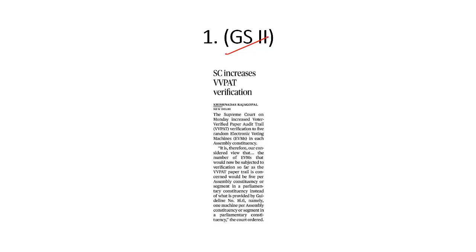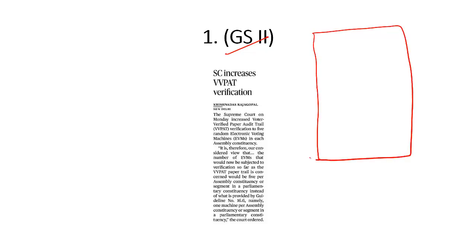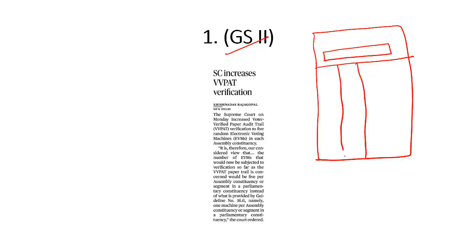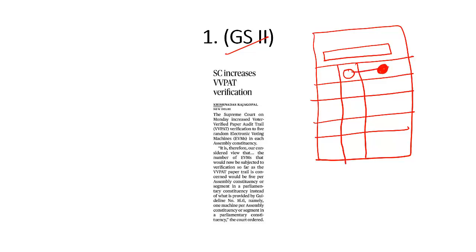Before electronic voting machines were put to use for Indian elections, we were using ballot papers and ballot boxes. On the ballot paper, the presiding officer would put his seal and signature. This ballot paper listed the candidates contesting the election from your constituency, as well as the symbol of the party. When this ballot paper was presented to me as the voter, I had the option of marking my preference, registering my vote against a candidate, and then dropping it into the ballot box.